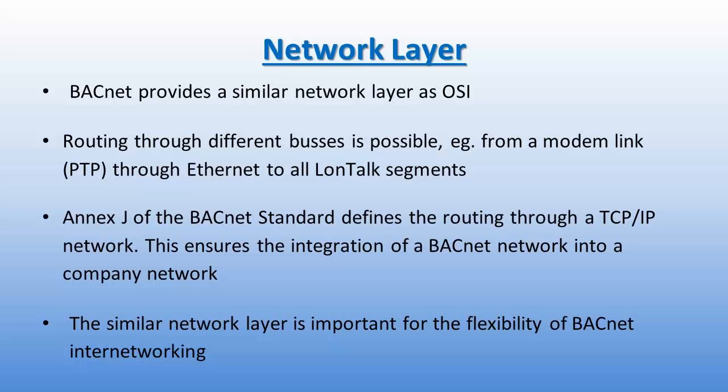The BACnet network layer and the OSI network layer are very similar, though some functions assigned to the network layer in the OSI model are not required in BACnet. One example is selecting a communication path between source and destination devices. BACnet imposes a requirement that at most one active path can exist between two devices. BACnet defines network layer protocol services that allow router tables to be configured, allowing routers to search for the path to a destination network and manage temporary connections to remote networks through a dial-up telephone connection. Routers can also indicate to client devices that a path to a destination cannot be located.